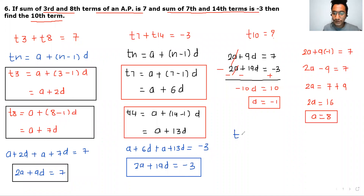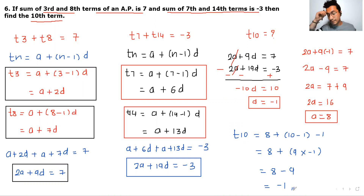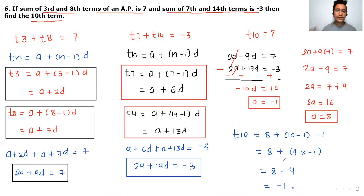Now we have A equals 8 and D equals minus 1, so T10 equals 8 plus 10 minus 1 multiplied with minus 1, which gives 8 plus 9 times minus 1, so 8 minus 9 equals minus 1. Therefore, term number 10 is minus 1. Take a screenshot of this.